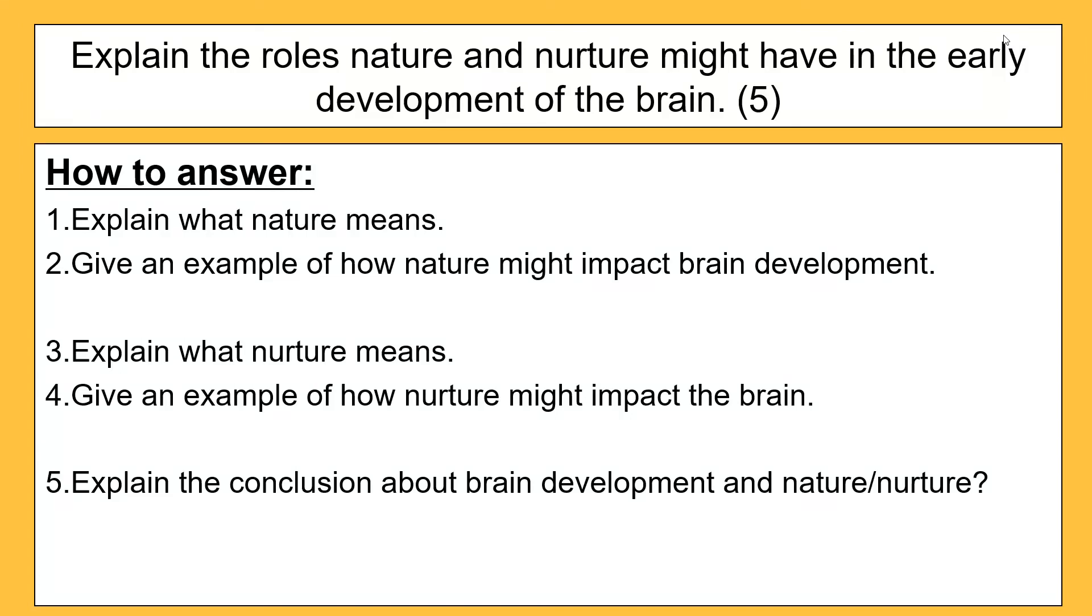What's all of this for? Well, it's potentially for something a bit of a harder question, a bit like this. Explain the roles nature and nurture might have in the early development of the brain. Quite a big question and actually quite easy when you break it down. There's a five mark question and the five things that we've got to do are listed on the screen now. So we need to explain what nature means, give an example of how nature might impact brain development, so talk about research into twins quickly. Then we need to explain what nurture means, give an example of how nurture might impact the brain, maybe linking to smoking. And then we put a little conclusion about brain development and the link between nature and nurture. If you want to have a go, you can pause the video now. But I'm now going to bring up a good answer to this question.